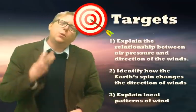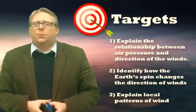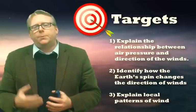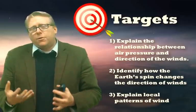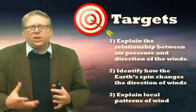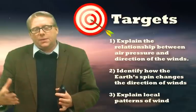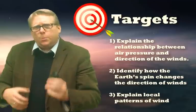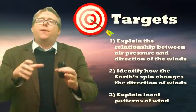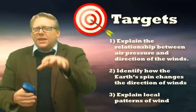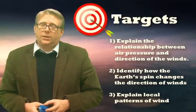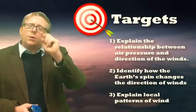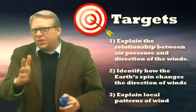In particular, we're going to be doing three different things. The first thing we're going to be doing is explaining the relationship between air pressure and the direction of the winds. After that, we're going to identify how Earth's spin changes that direction of the wind and kind of tweaks it. And then we're going to be looking and identifying local patterns. So you can maybe explain why the Columbia Gorge may have more wind or why Sandy might have specific winds. We're going to be looking for those three things throughout this video.